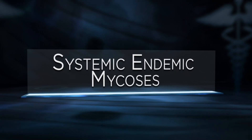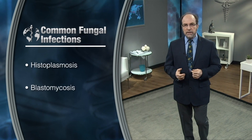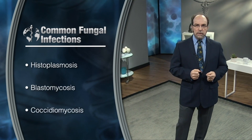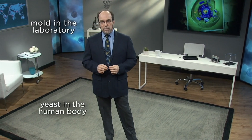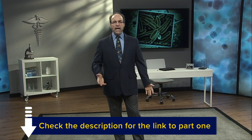Next, we're going to turn our attention to more serious fungal diseases. The most common fungal infections that cause systemic or body-wide disease in humans are histoplasmosis, blastomycosis, and coccidiomycosis. All three are examples of dimorphic fungi, growing as a mold in the laboratory and as a yeast in the human body. What is unique about these three fungal diseases is that they characteristically inhabit a unique geographic area of the United States, and hence are called endemic mycoses.